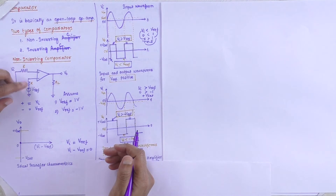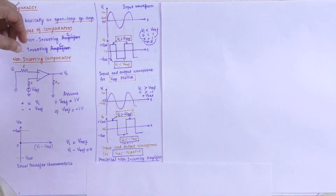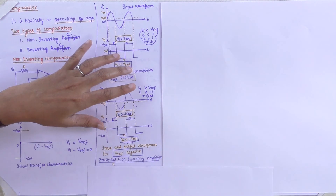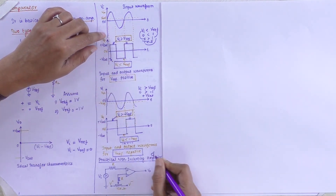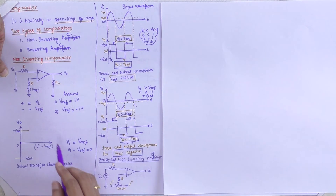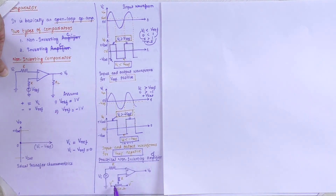This is what we derive from the non-inverting comparator. The same concept works with a slight variation in case of the inverting comparator. In the inverting comparator, the plus terminal will be the V reference and the minus input terminal will be the input voltage.